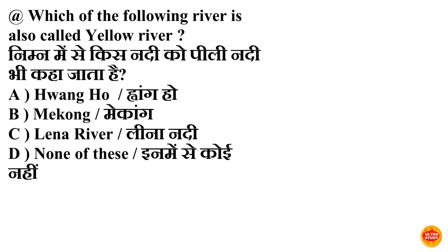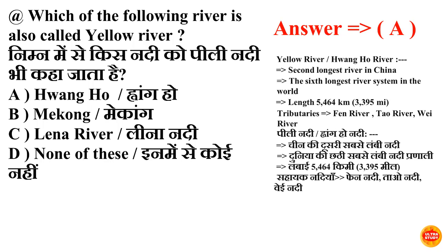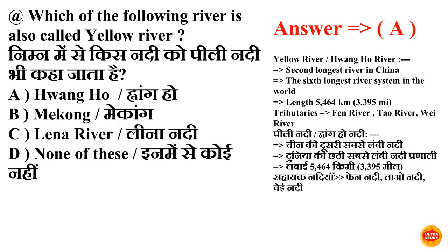Next question: which of the following rivers is also called the Yellow River? Inme se kis nadi ko Pili Nadi bhi kaha jata hai? Option A is correct — Huanghe (Huang Ho). Huanghe nadi ko Pili Nadi aur Yellow River bhi kaha jata hai. Huanghe nadi China ki doosri sabse lambi nadi hai aur iska lambi hai 5,464 km. Iska sahayak nadi hai Fen nadi, Tao nadi, aur Bei nadi.